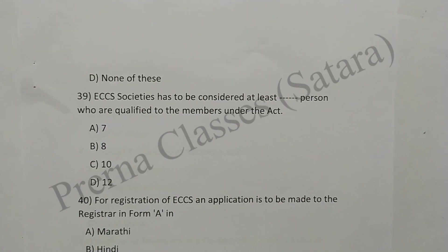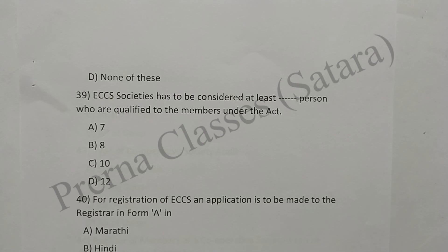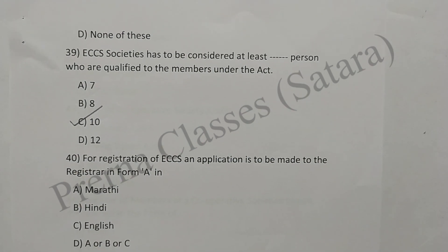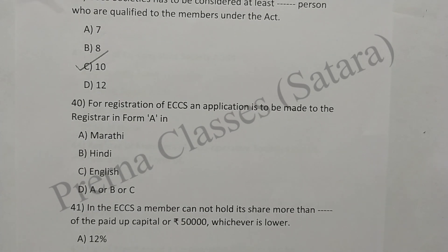Question 39: An ECCS society has to be registered with at least 10% of members who are qualified to be members of the society. Option C is correct. Question 40: For registration of ECCS, an application is to be made to the Registrar in form number in Marathi, Hindi, or English — A or B or C. Option D is correct.